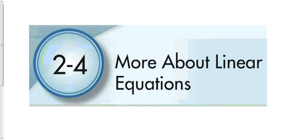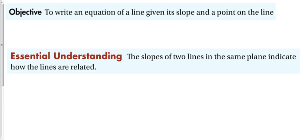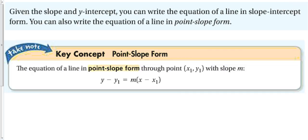Section 2-4: more about linear equations. In this section we're going to continue what we talked about with linear equations in the last section by introducing a couple of new forms — specifically point-slope form and standard form. Our objective is to write an equation of a line given a slope and a point, and also understand how slopes of two lines in the same plane indicate how the lines are related.